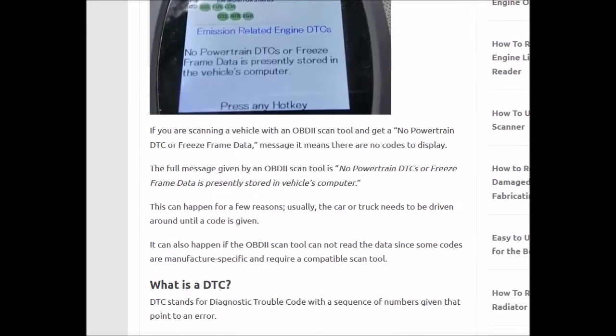So what can cause this problem and how do you get around it? Basically it could be two things. Number one, you just need to keep driving and running the vehicle until a code comes up. Or number two, it's possible that the OBD2 scan tool you have can't read the codes in the computer. Most scan tools can read global codes, but many vehicles have manufacturer-specific codes — like VAG-COM codes, which are specifically for Volkswagen — so you need an OBD2 scan tool that can read those codes, or else you won't be able to read the data.